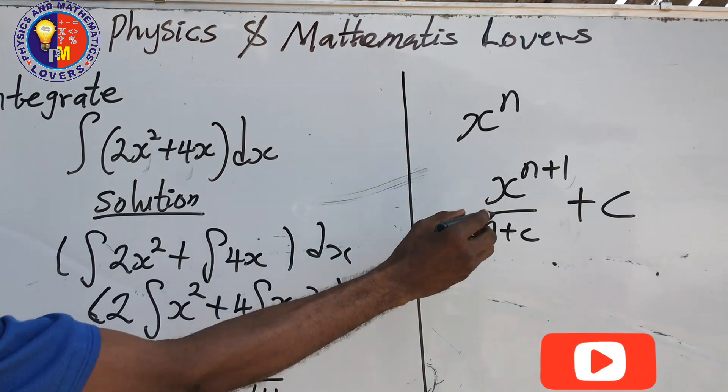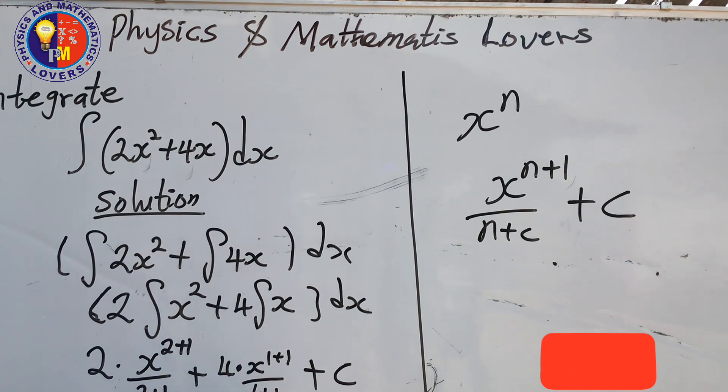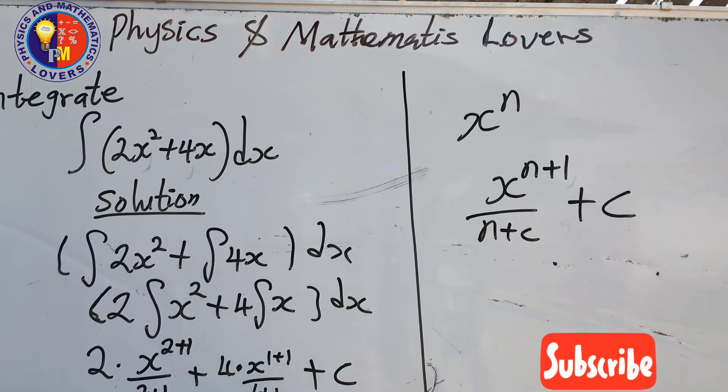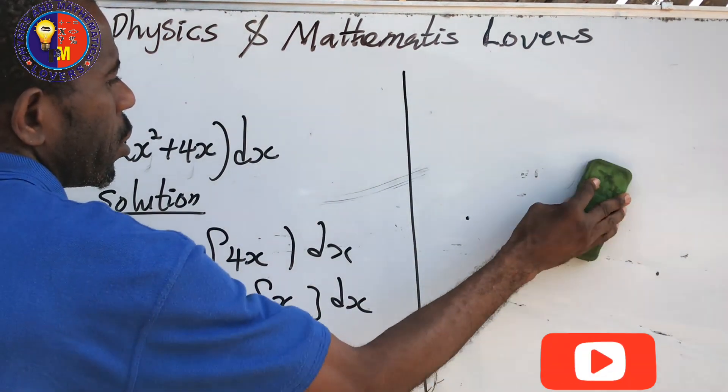We are multiplying, it becomes x to power 1 plus 1 all over 1 plus 1. We're going to have your constant. At this point now, I'm going to have 2 multiply x raised to power 3 all over 3, plus 4 multiplying x raised to power 2 all over 2, plus c. Let's continue from here so we can have a clear view.